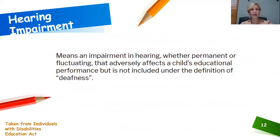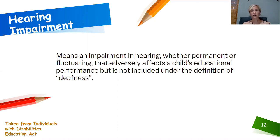Hearing impairment means an impairment in hearing, whether permanent or fluctuating, that impacts the child's educational performance, but is not included under the broader definition of deafness.